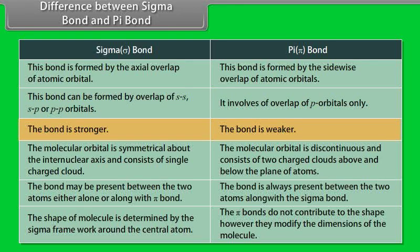Sigma bond is stronger because overlapping can take place to a larger extent, whereas Pi bond is weaker because the overlapping occurs to a smaller extent. In a sigma bond, the molecular orbital is symmetrical about the internuclear axis and consists of a single electron cloud, whereas in a Pi bond, the molecular orbital is discontinuous and consists of two charged clouds above and below the plane of atoms. A sigma bond may be present between two atoms alone or along with a Pi bond, whereas a Pi bond is always present along with the sigma bond. The shape of a molecule is determined by the sigma framework around the central atom, whereas Pi bonds do not contribute to the shape but modify the dimensions of the molecule.